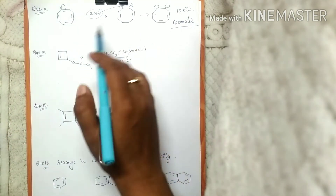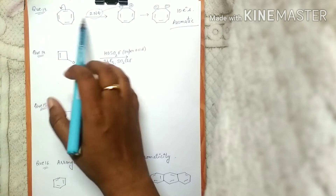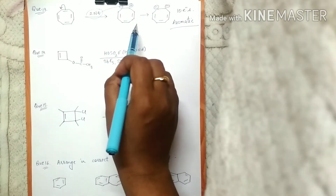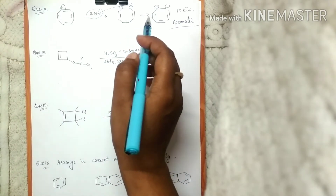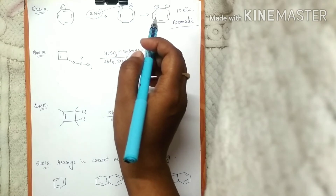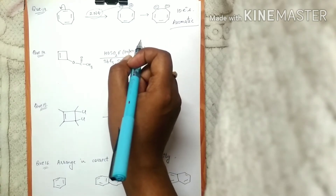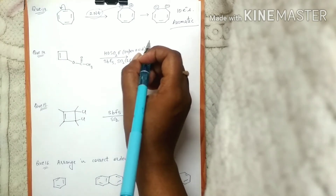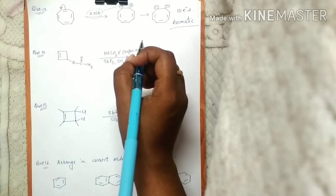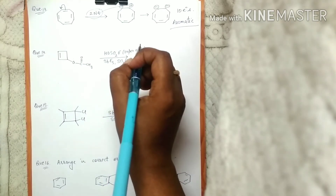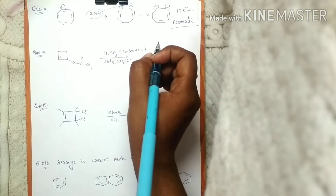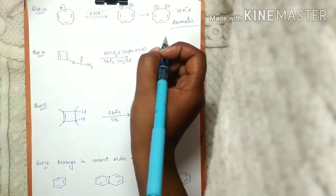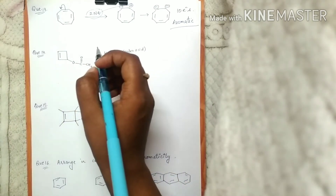In each question we just have to do the basic reaction and then find out the number of electrons taking part in resonance. As covered in previous questions, regarding heteroatoms: if a double bond is present with the heteroatom, that heteroatom is not going to donate its lone pair to the system. If a double or triple bond is not present, it is going to donate its electrons.